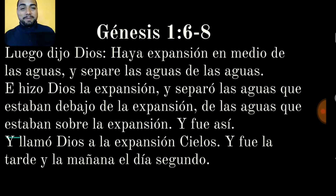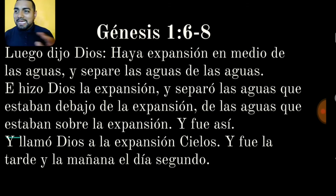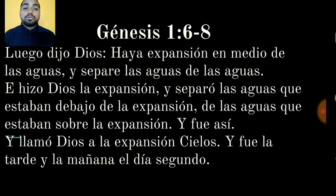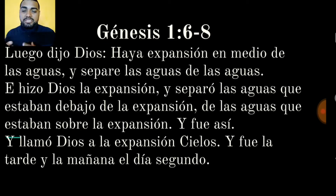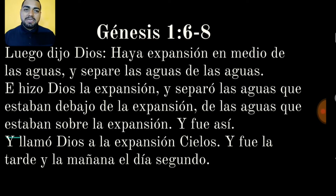Al hacer experimentos de carbono 14, análisis de radiometría y muchos otros experimentos que la ciencia utiliza para poder datar algún pedazo de madera o roca, siempre lo datan a millones de años. Precisamente porque el carbono 14 es una prueba que es programable con conceptos e ideas que se presuponen como las condiciones ambientales de aquel momento en que el supuesto hecho ocurrió.